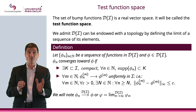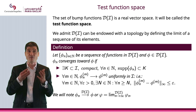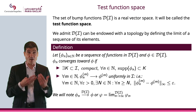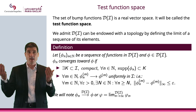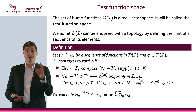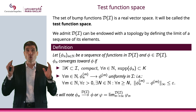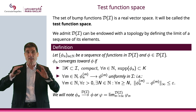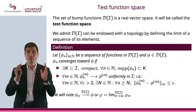Let me give you the definition of convergence in the test function space, in the space of bump functions. I'm going to consider a sequence of functions φₙ — each φₙ is a bump function — and a φ which is also a bump function, an element of the test function space. I will say the sequence φₙ converges to φ in D if two things are satisfied. Number one: I want a compact set K for which the support of every φₙ is included in K. It's important that the support of φₙ does not get out of control — it needs to be included in a fixed set K.